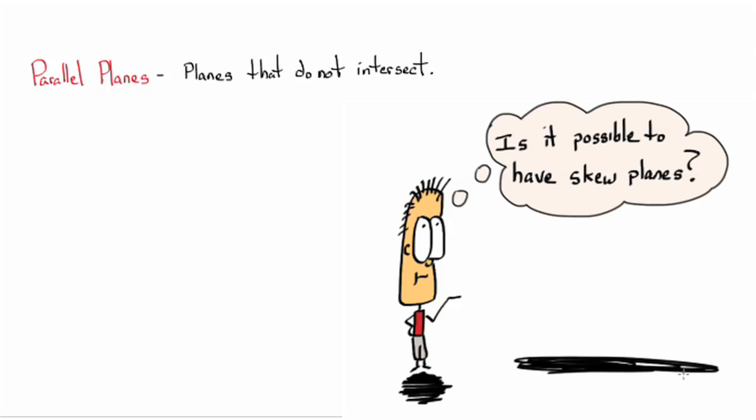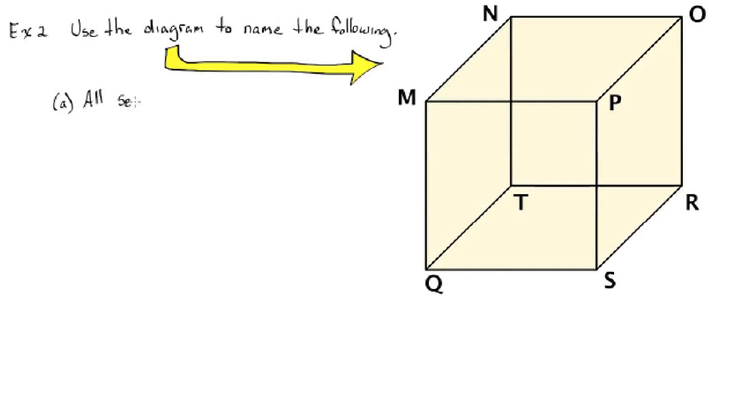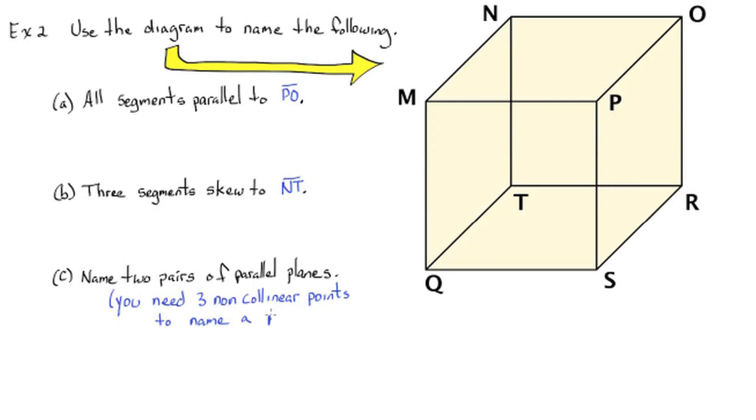Parallel planes. Planes that do not intersect. Simple enough. Example 2. Use the diagram to name the following. All segments parallel to segment PO. Three segments skew to segment NT. Name two pairs of parallel planes. Remember, you need three non-collinear points to name a plane. Pause.